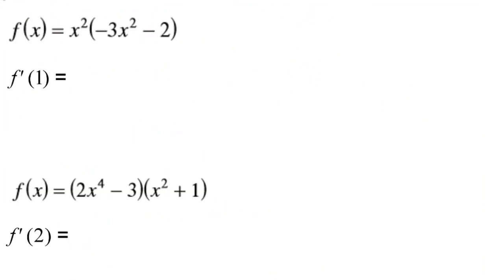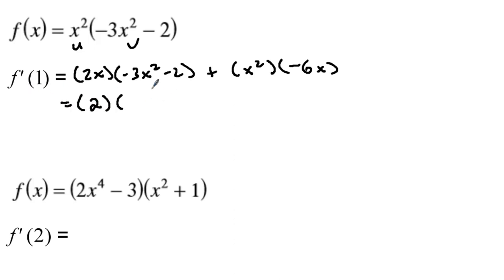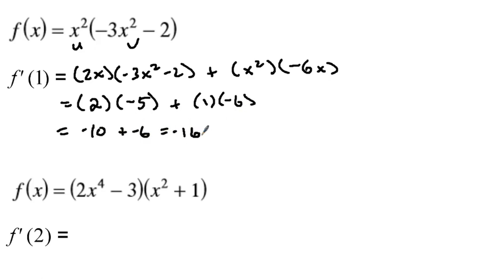Two more examples. We have x squared as u and the other function as v. We do 2x times negative 3x squared minus 2, plus we keep u the same and do the derivative of v: negative 6x. Now for f prime of 1, we plug in 1: 2 times 1 is 2, times negative 3 minus 2, that's negative 5. Plus 1 squared is 1, times negative 6. So we get negative 10 plus negative 6, which is negative 16.